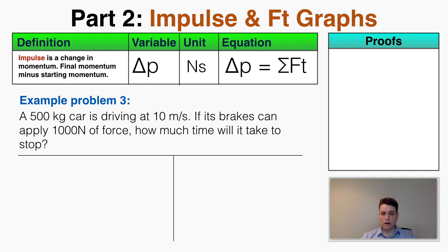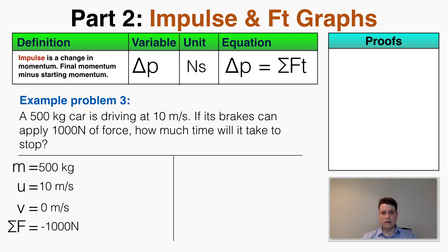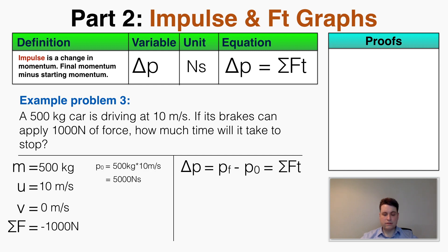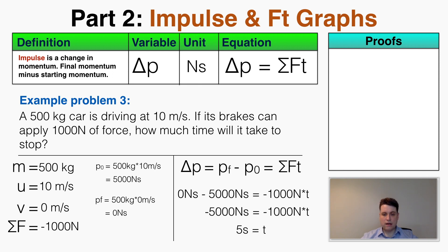Example three: a 500 kg car driving at 10 m/s applies brakes with 1,000 Newtons of force. How long does it take to stop? The final velocity is 0 m/s, and the braking force is negative 1,000 Newtons since it opposes forward motion. The initial momentum is 5,000 Newton seconds and the final momentum is 0. So 0 minus 5,000 equals negative 1,000 Newtons times time, giving a stopping time of 5 seconds.